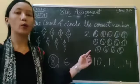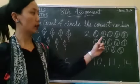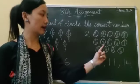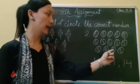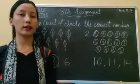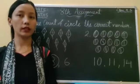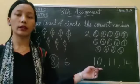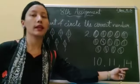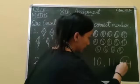Now next we have balls. Let's count how many balls are there: one, two, three, four, five, six, seven, eight, nine, ten, eleven, twelve, thirteen, fourteen. How many balls are there? There are fourteen balls. Now let's find number fourteen. Is this number fourteen? No. Is this number fourteen? No. Is this number fourteen? No. Is this number fourteen? Yes. Circle it like this.